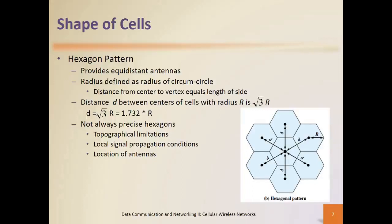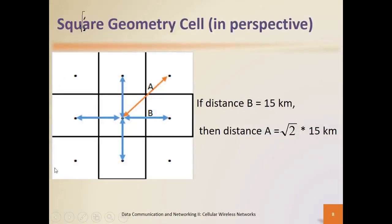Let's look at some examples of how you solve some of these design implementation challenges given the cell shapes we have. We'll start with the square pattern and use an illustration, then move to the hexagon pattern. Here is a scenario where we have a square geographical area with nine cell demarcations, so we have nine base station units within each of the various square patterns.